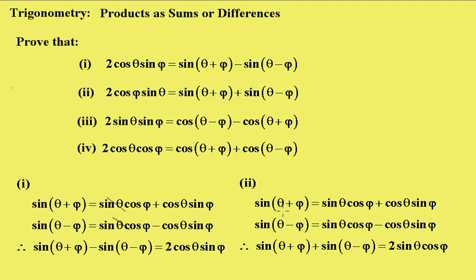The other one is a similar sort of thing. We write sin(θ + φ) and sin(θ - φ) out, but this time we add them together. And when you add them together, you get that the cosines go out and you get 2 sin θ cos φ.